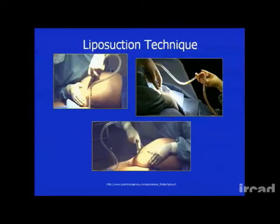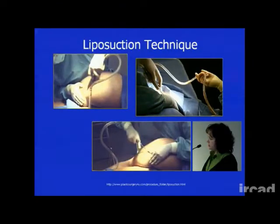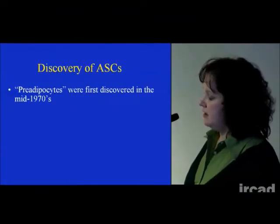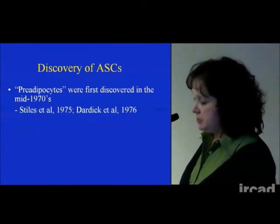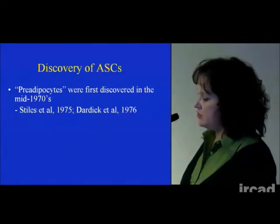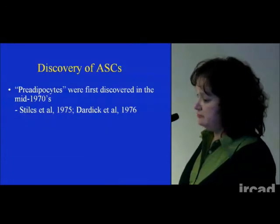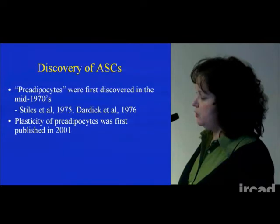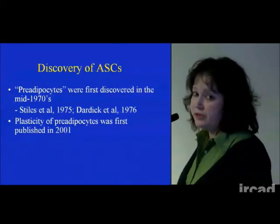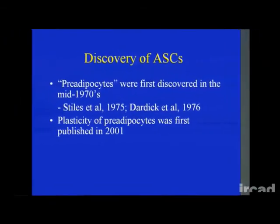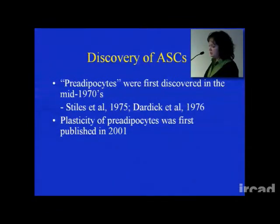Fat is typically removed by liposuction. My colleague Dr. Rubin does perform liposuction, but we also focus on full body contour, abdominoplasties — basically any elective cosmetic surgery that results in discarded adipose tissue, we bring to the lab. The discovery of stem cells in adipose tissue: about 30 years ago it was determined that there are not just adipocytes in adipose tissue, but another smaller cell that looked like a fibroblast was discovered. In 1976, Dardik found that if you treat these fibroblast-like cells with insulin, you can differentiate them into adipocytes. So for 30 years they were called pre-adipocytes and examined in diabetes and obesity research.